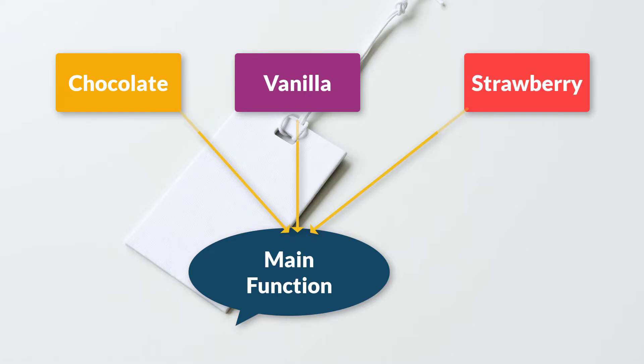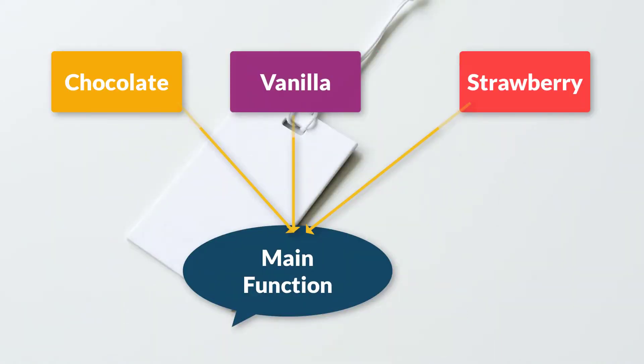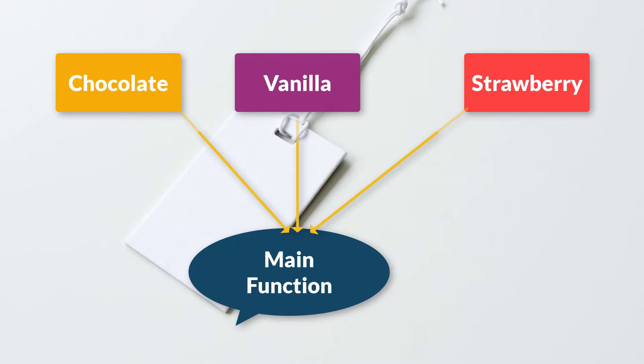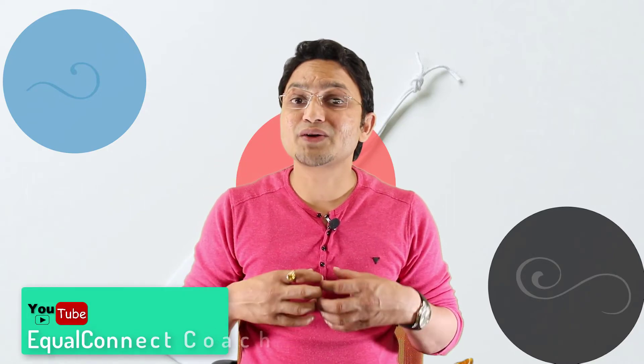In the conventional approach, the chocolate, vanilla, and strawberry classes are tightly coupled with the main function (client code). Whenever something changes in those classes, you have to recompile the code along with the client code — which is uncomfortable. Additionally, you have to create objects of all three classes regardless of whether you need them, which wastes memory and degrades system performance.